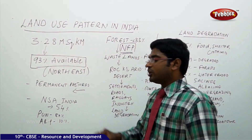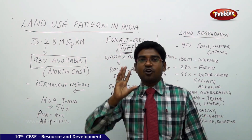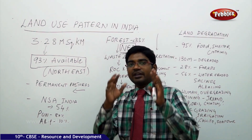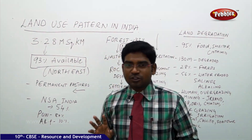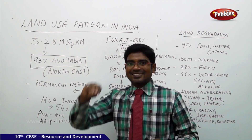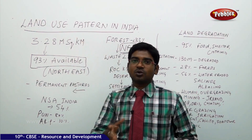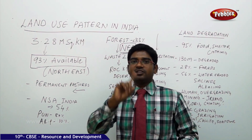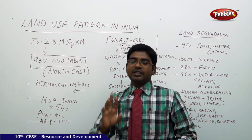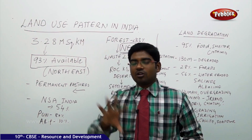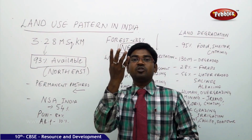The net sown area in India is only 54% out of the 93% available. Only 54% of the land has been used for complete agricultural purpose. But this is not exactly 54% in every state — it varies from state to state. In one state it may be 10%, in another 20%, and in some states it may be 90%, but in states like Rajasthan it may be only 5%.